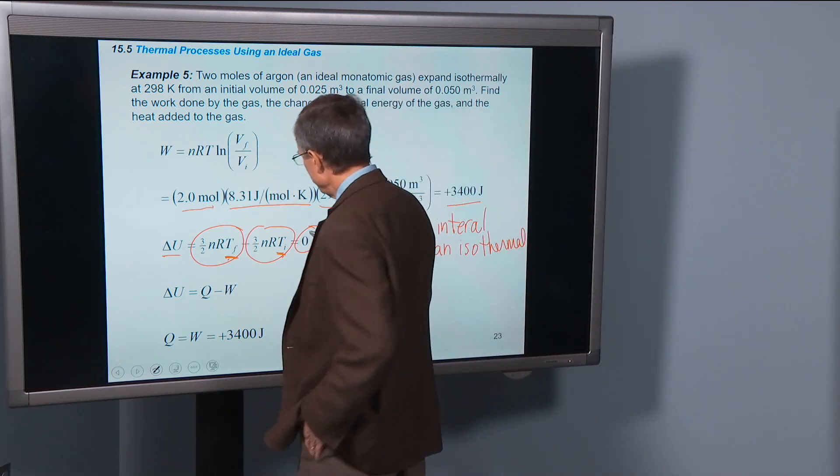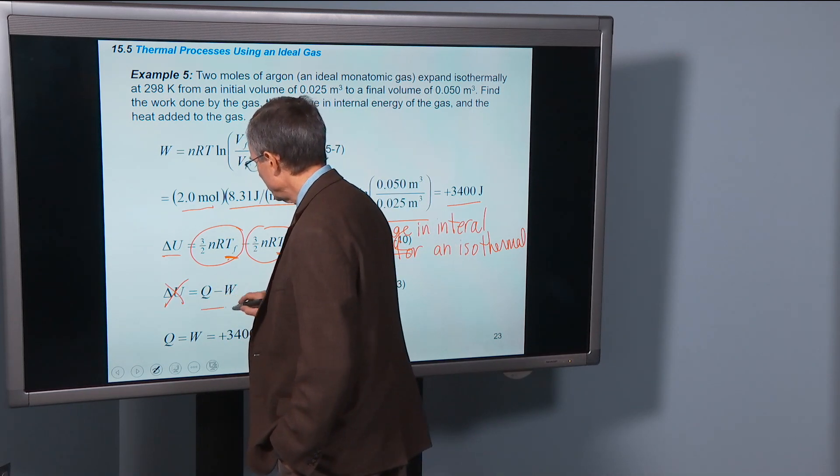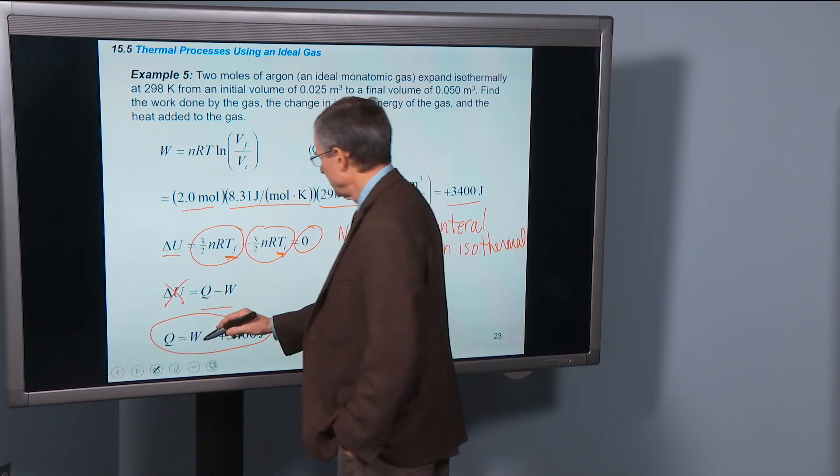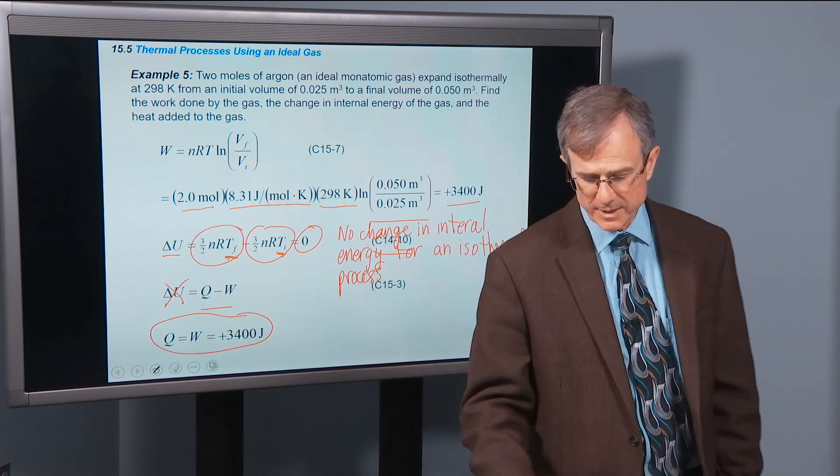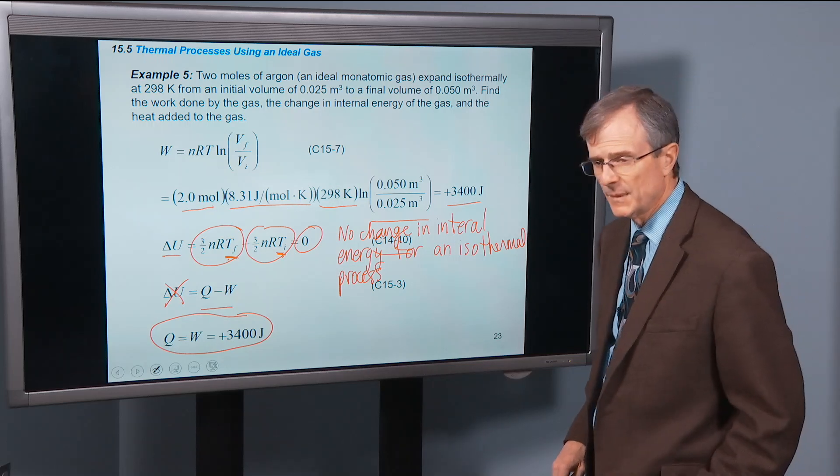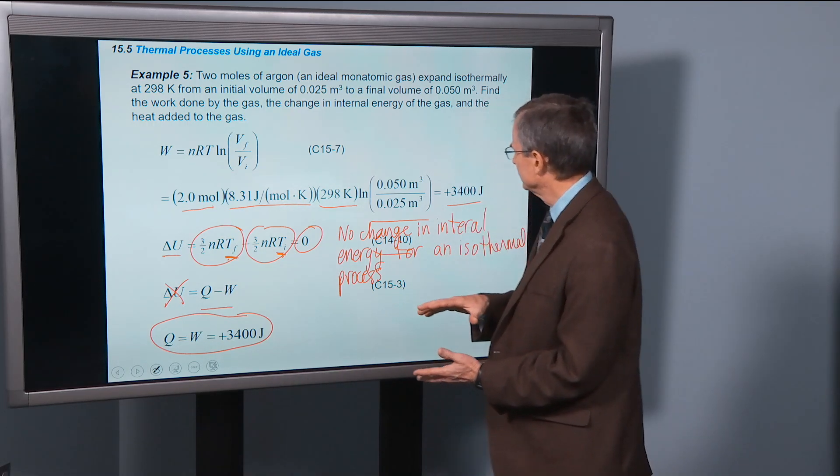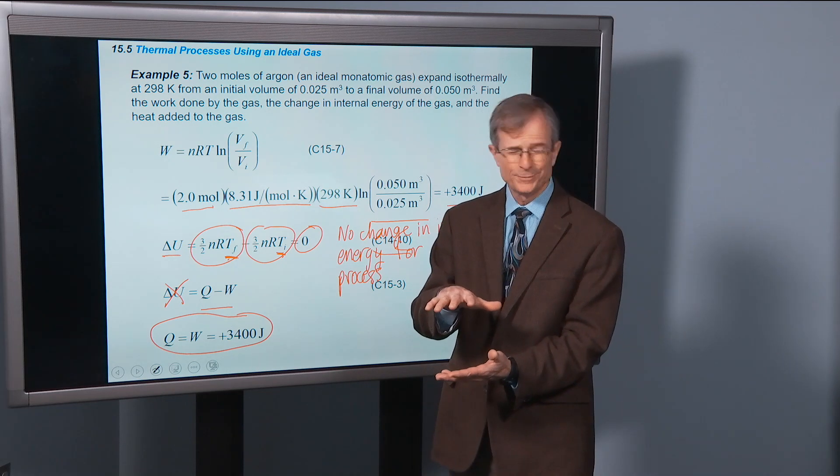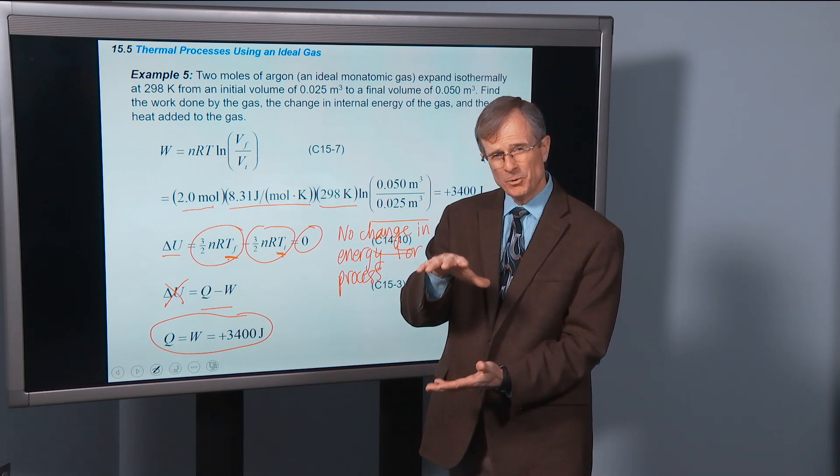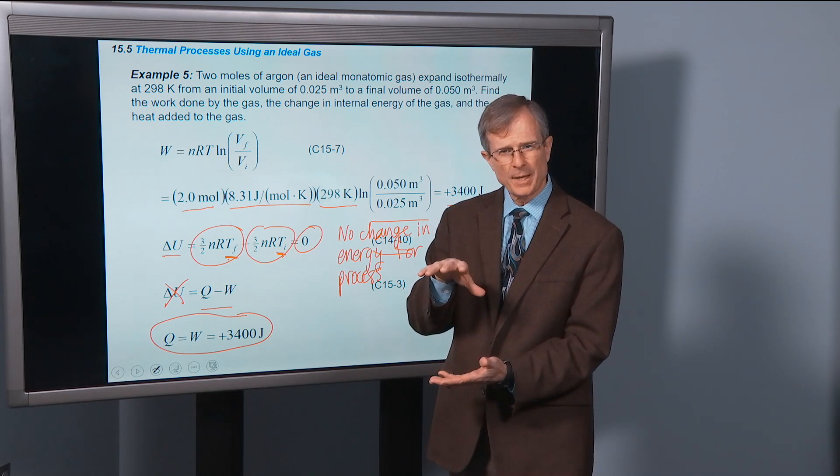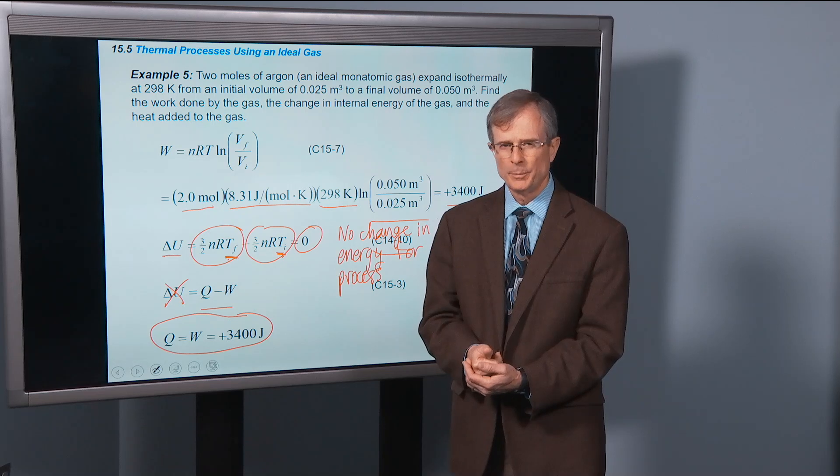Well, if the change in internal energy is zero, then Q has to equal W. So there must have been, in order to keep that temperature the same, during the expansion from 0.025 cubic meters to 0.05 cubic meters, in order to keep that internal energy the same, you must have had to add some heat to it.